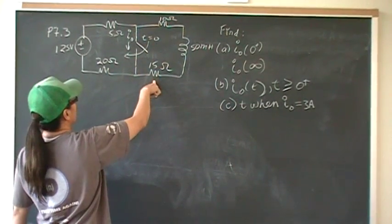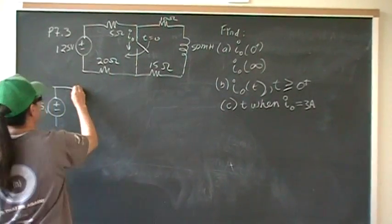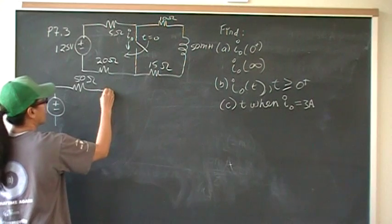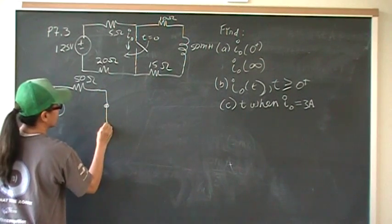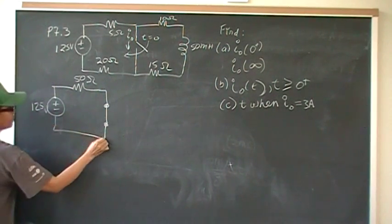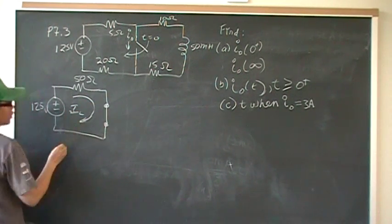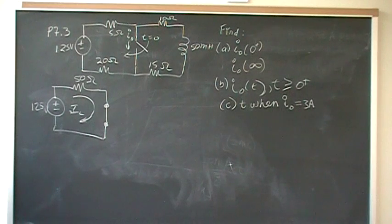15 and 15 is 30 and 50. So we're all in series. We can combine that. And we have an inductor that's behaving like a short.